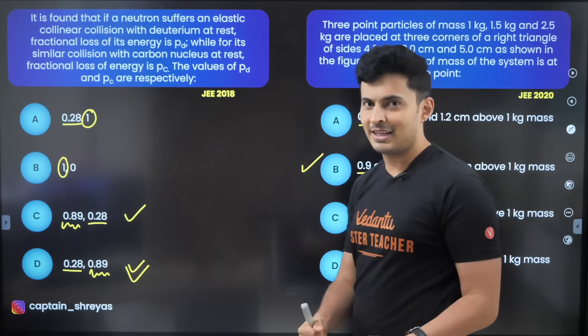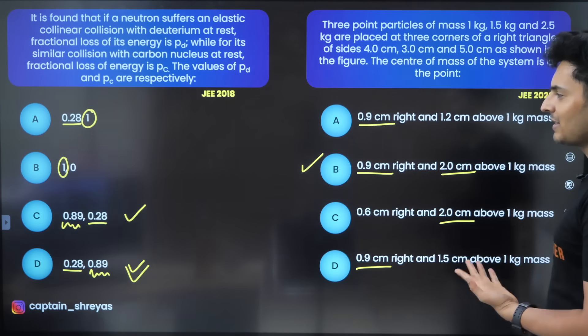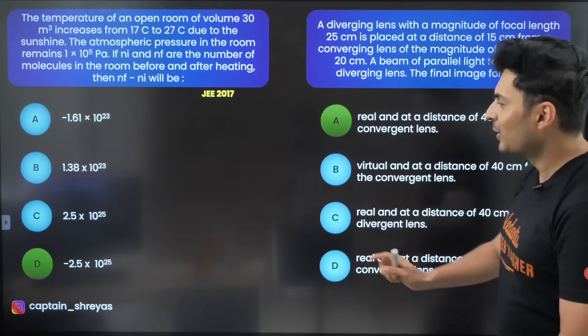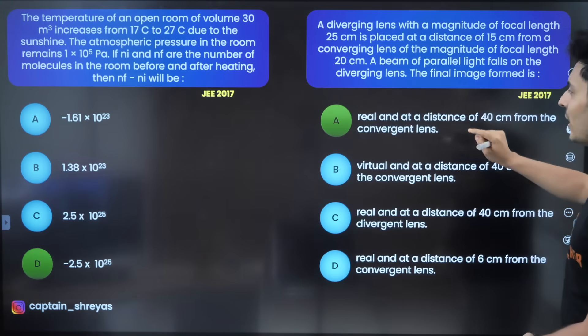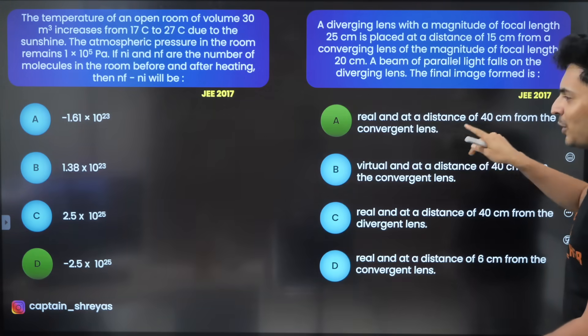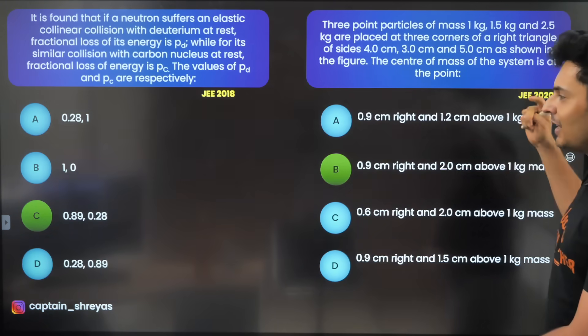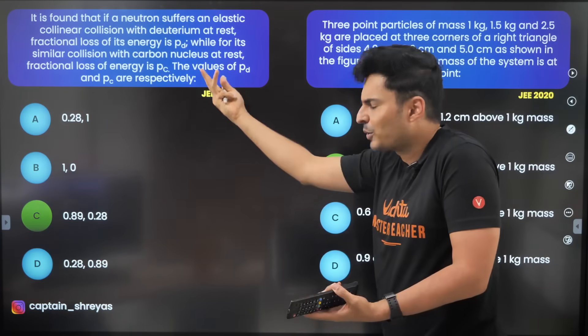Ready to see what is the correct answer? Okay so for all the questions let's have a look. The first question look at this minus 2.5 is correct. Remember we had made a choice between C and D and look at this option A is correct over here in question 2.